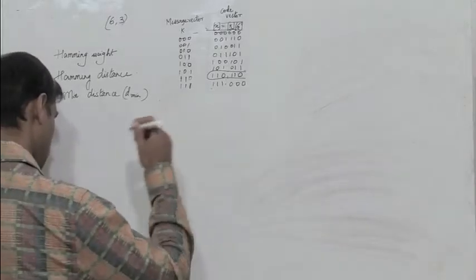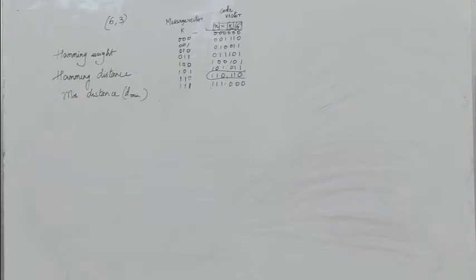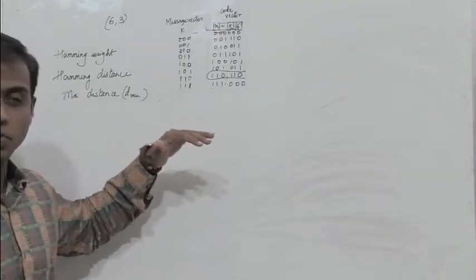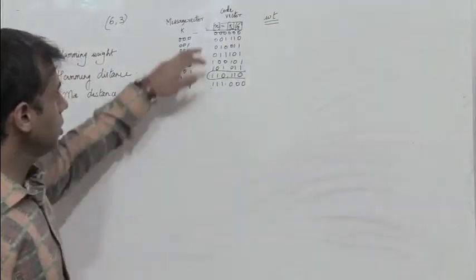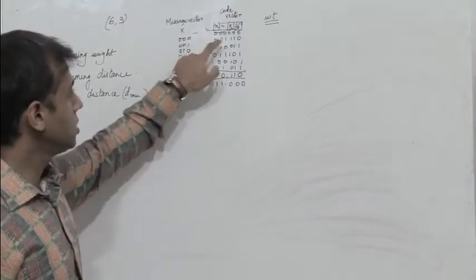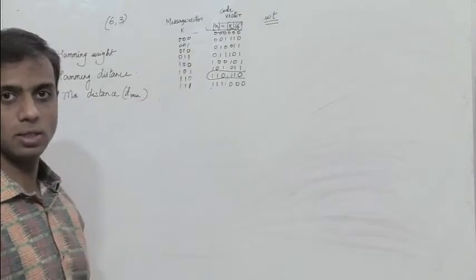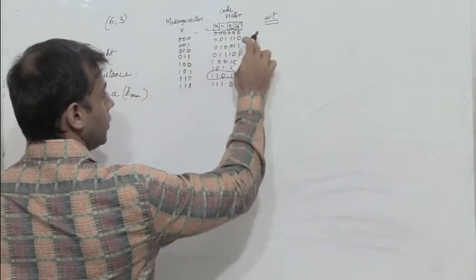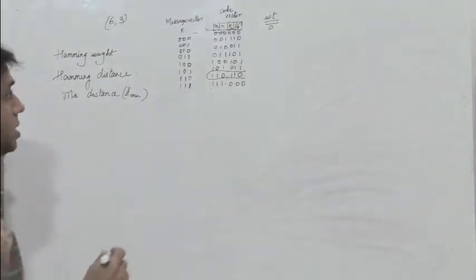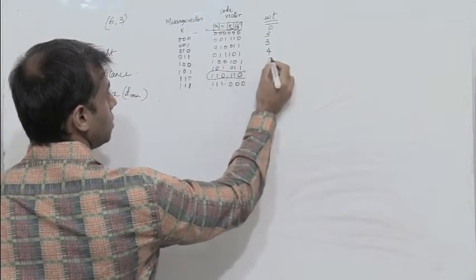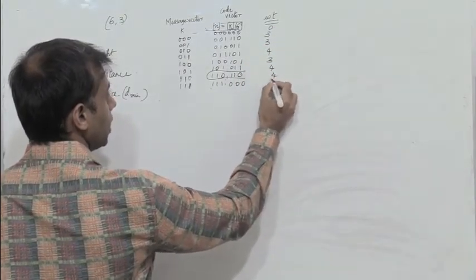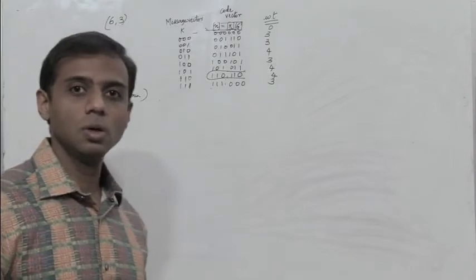How do we define hamming weight? The hamming weight of a code word C is defined as the number of non-zero components in the code word. So these are all the code words. In the first code word, all elements are 0, so the weight is 0. The next has 3 ones, so the weight is 3. Then we have weights of 3, 4, 3, 4, 4, and 3 for the remaining code words.